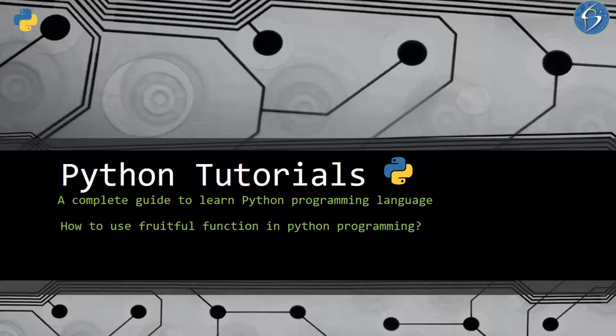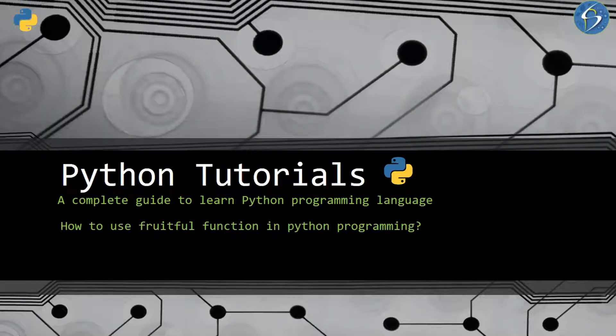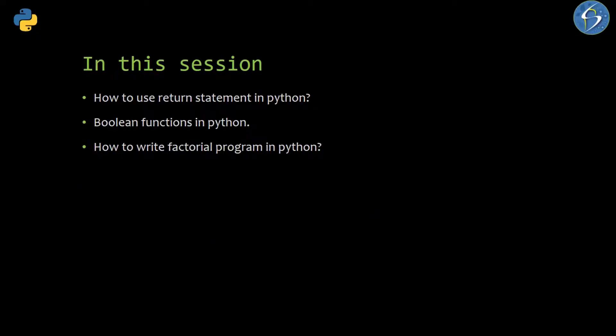This is part 8 of our Python programming tutorial. In this video we will discuss fruitful functions, or how to use fruitful functions in Python programming. The overall explanation has been divided into three parts: how to use the return statement in Python, boolean functions in Python, and how to write a factorial program in Python.